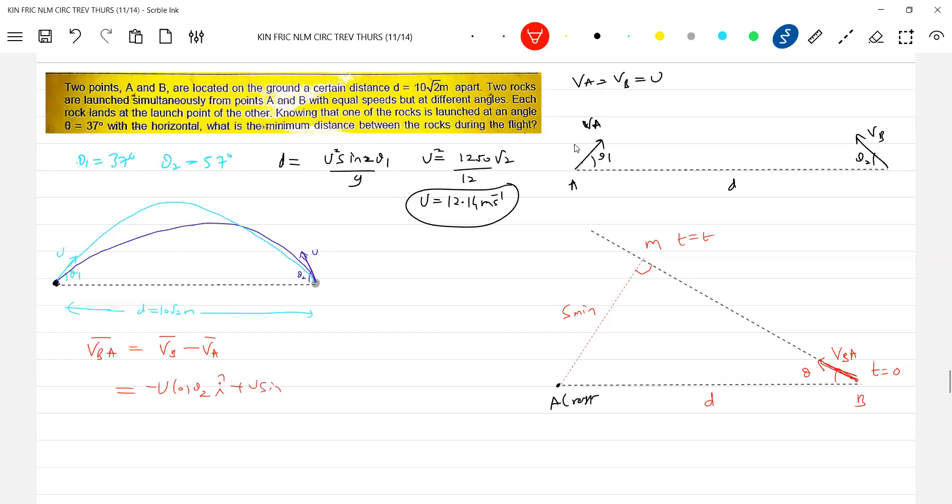VB. So this should be equal to U cos theta 2 i cap, U sin theta 2 j cap